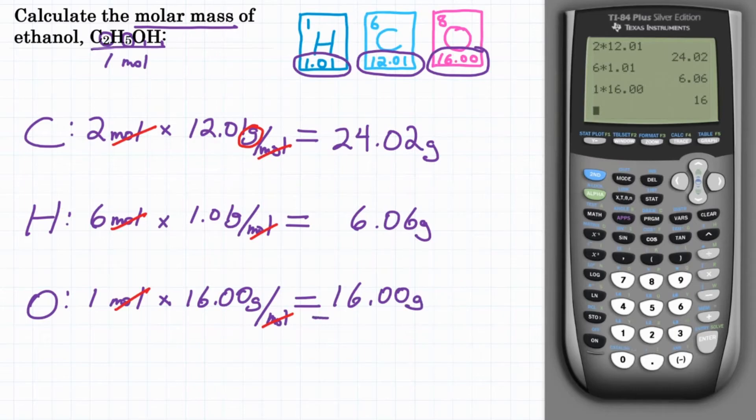And now we're going to add all of these together to get our final molar mass for ethanol. So 24.02, we're going to add 6.06, and then also add 16.00. Hit enter, and we get 46.08.